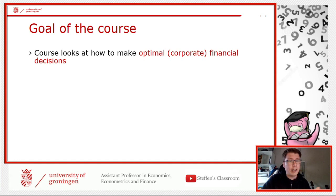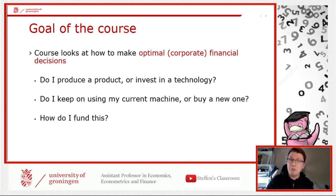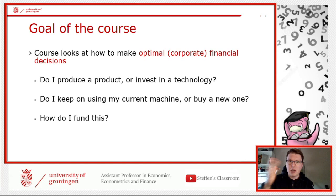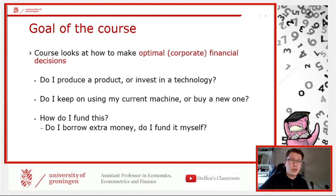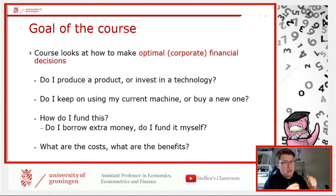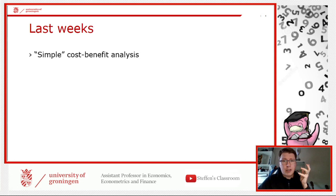This course looks at optimal and some sub-optimal corporate financial decisions — whether you produce a certain product, invest in technology, keep your machinery or buy a new one. We also look at how we actually fund this: debt, equity, or other means. And of course, what are the costs and benefits — is it worth it?